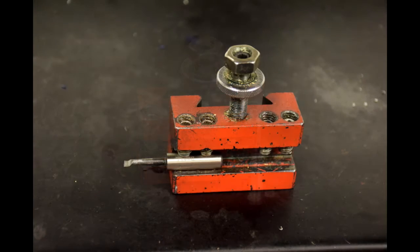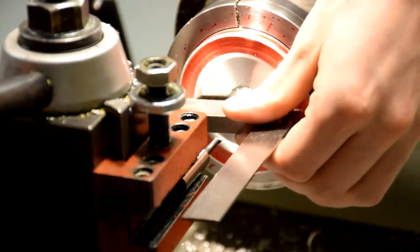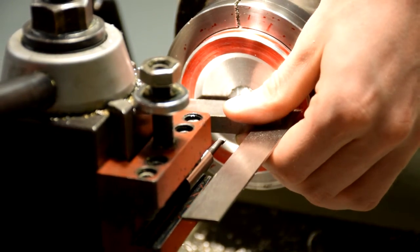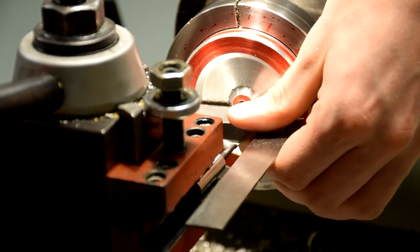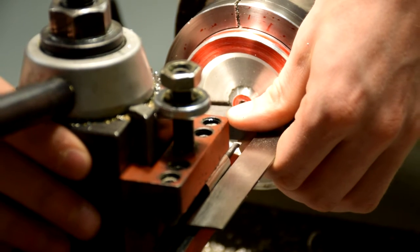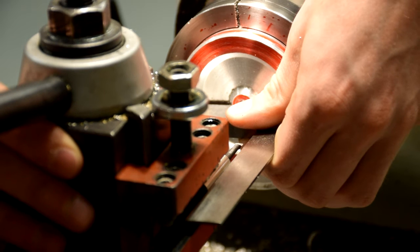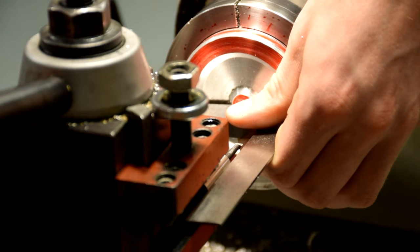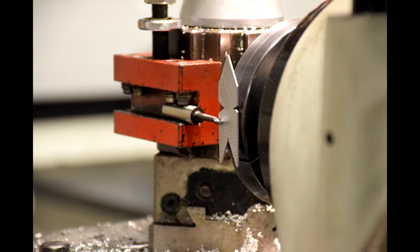Install a boring bar in the quick change block. Set the angle of the bit to be perpendicular to the face of the part. Set the height of the boring bar using a fishtail.